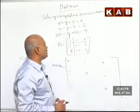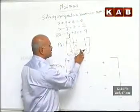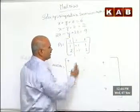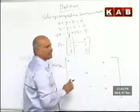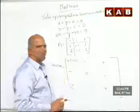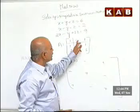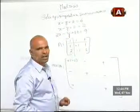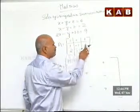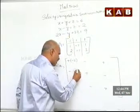Applying ad minus bc: I get minus 3 minus 2. That gives minus 3 minus of minus 1, which is plus 1. It becomes minus 2. Now I would like to find the first row, second column element. Eliminating that part, you get 3, minus 2; that gives 1. So I am writing 1 there.